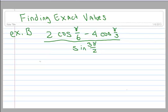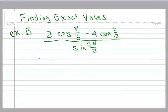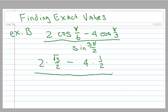So let's have our unit circle next to us, and let's just start filling this in. So we have 2 times, and the cosine of pi over 6 is the square root of 3 over 2, and then we subtract 4 times the cosine of pi over 3, well, that's 1 half, and then this is all over the sine of 3 pi over 2, which is negative 1.